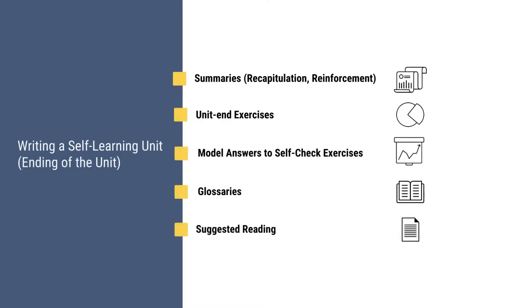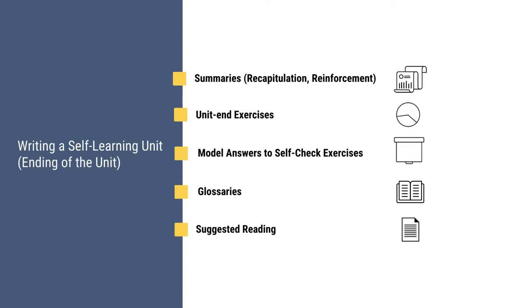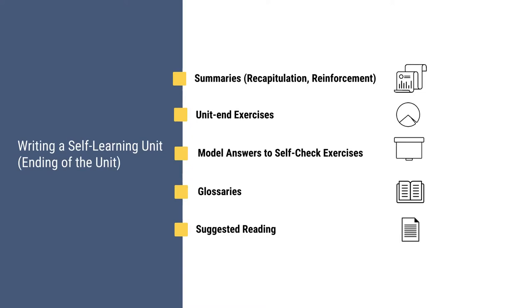And finally, we have the ending of the unit. The ending of the unit mainly consists of the 'let's sum up' — the summary part of the unit. This part recapitulates and consolidates all the points which have been covered in the unit. Then we have the glossary, which explains the difficult words or phrases which have been used in the unit. Then we have the answers to the self-check exercises and self-assessment questions. We also have the suggested reading. Then we have the unit-end exercises — these are additional exercises given to the learners to understand the unit in a better manner.